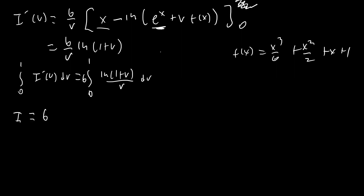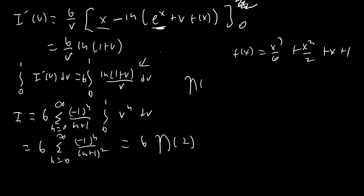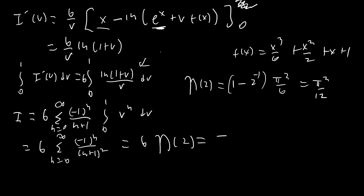So we get I equals 6 times the integral from 0 to 1 of ln(1 + v) over v dv. Expanding as an infinite sum, this is 6 times the sum from n equals 0 to infinity of (−1)^n over (n+1) times the integral from 0 to 1 of v^n dv, which equals 6 times the sum from n equals 0 to infinity of (−1)^n over (n+1)², which equals 6 times eta(2). Since eta(2) = (1 − 2^(−1)) times zeta(2) = (1/2)(π²/6) = π²/12, our final answer is 6 times π²/12, which is π²/2.